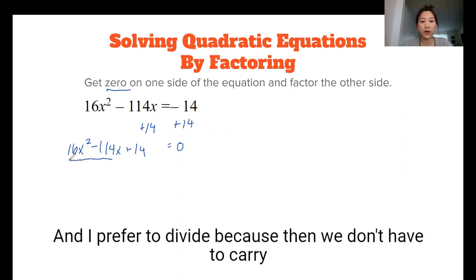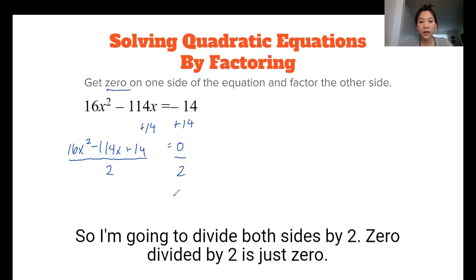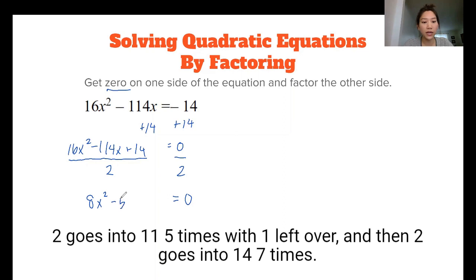So I'm going to divide both sides by two. Zero divided by two is just zero. 16 divided by two is 8x². 114 divided by two is two goes into 11 five times with one left over. And then two goes into 14 seven times.